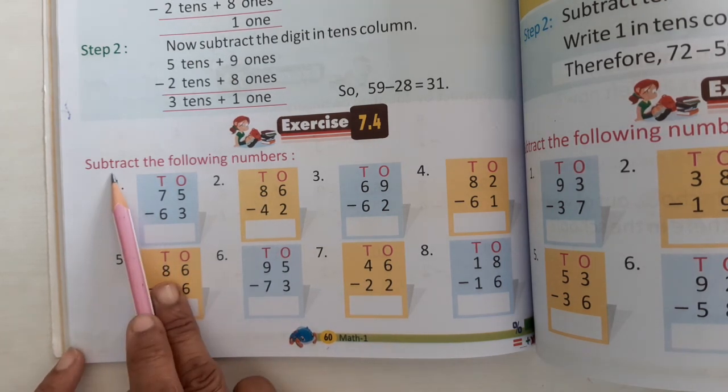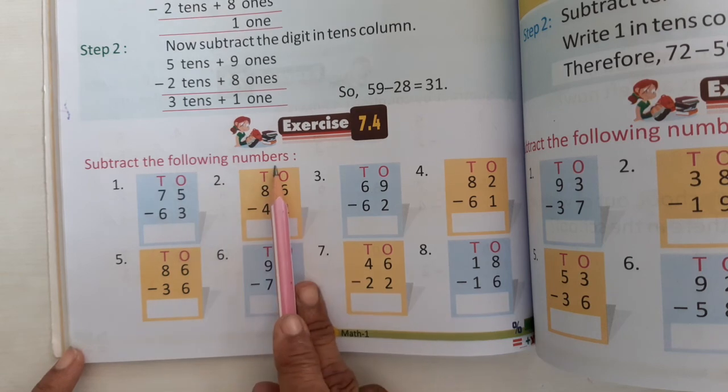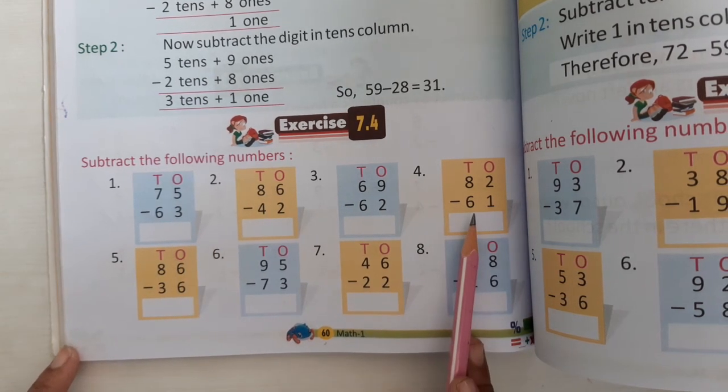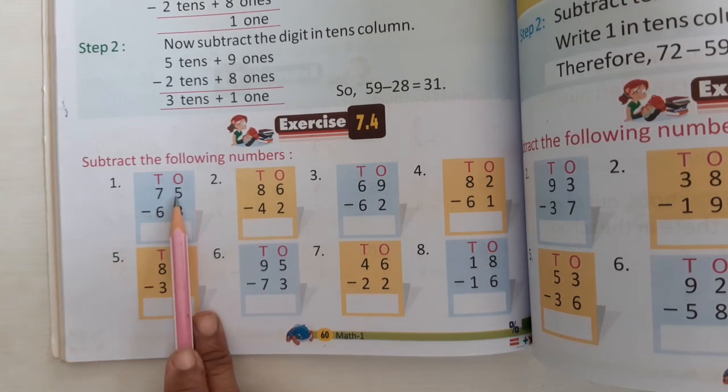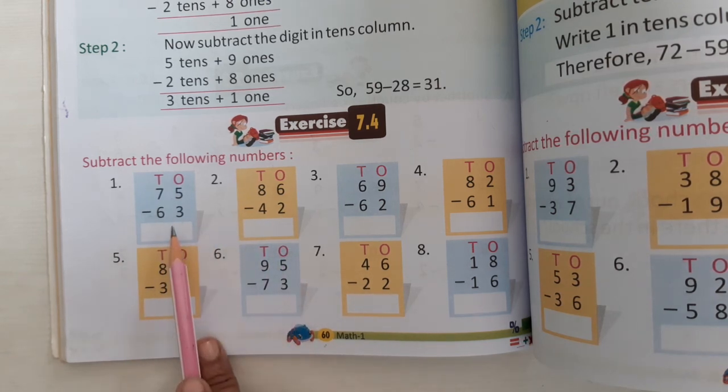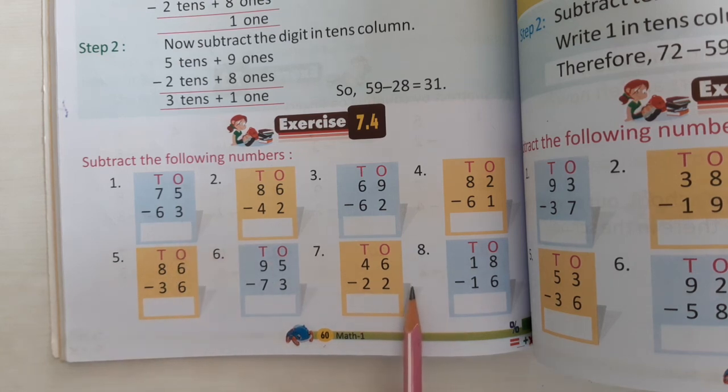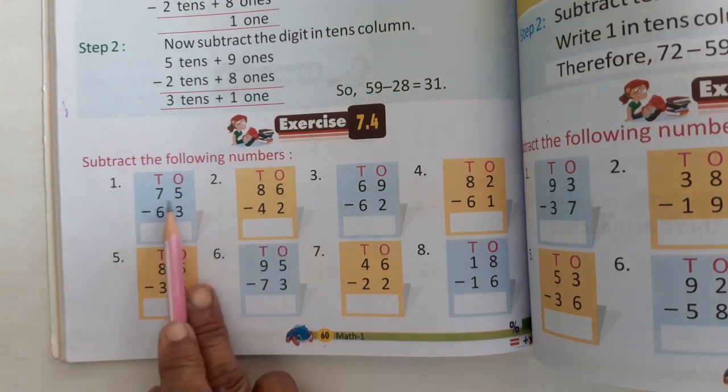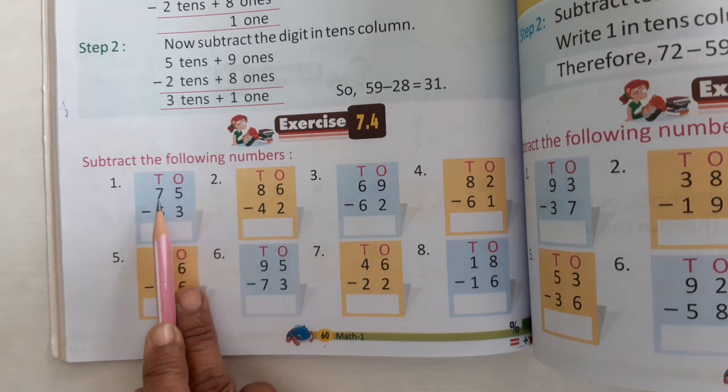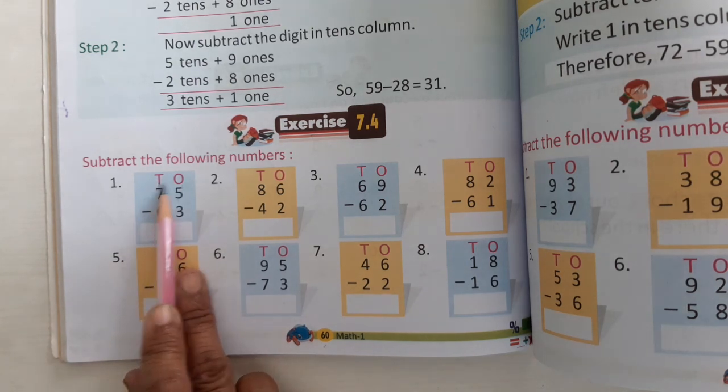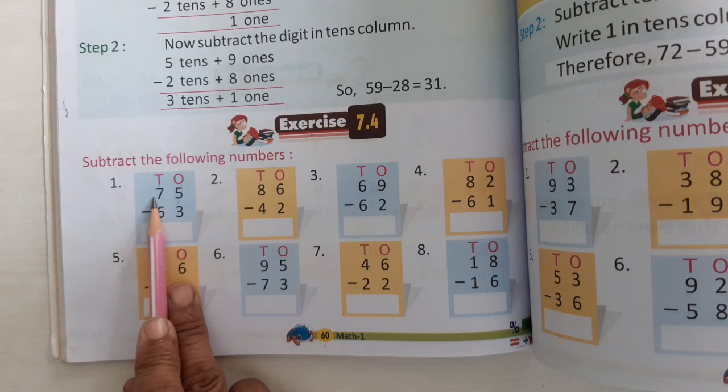So here we are subtracting the following numbers. Here we have sums to subtract. So here we have minus sign. So here we can do it with the book. I am going to show you the questions and you can see the questions. First, this is the ones place, the ones place.